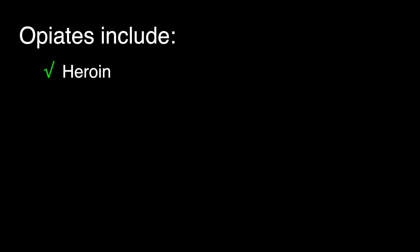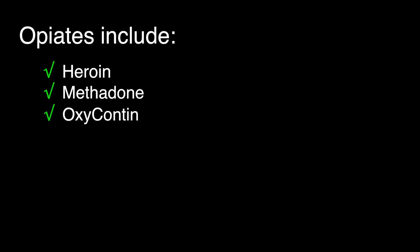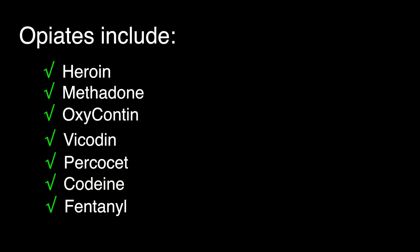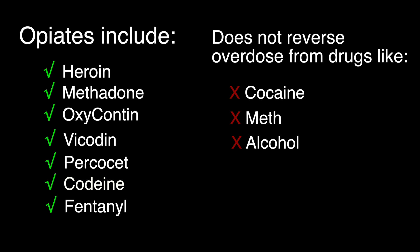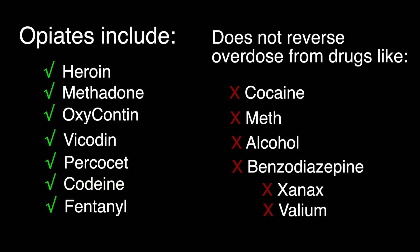Opiates include drugs like heroin, methadone, OxyContin, Vicodin, Percocet, Codeine, and Fentanyl. Naloxone does not reverse overdose from drugs like cocaine, meth, alcohol, or benzodiazepines like Xanax or Valium.